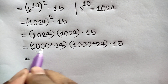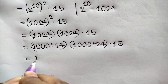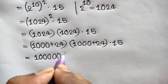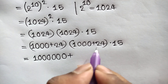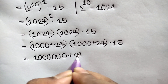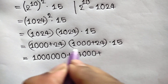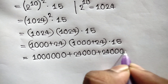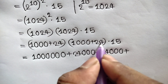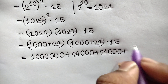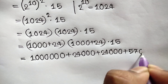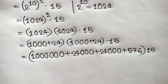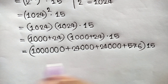Now multiplying these two numbers: 1000 times 1000 is one million (1 with six zeros), plus 1000 times 24 that means 24,000, plus 24 times 1000 that means 24,000, plus 24 times 24 that means 576. Then multiplying by 15.